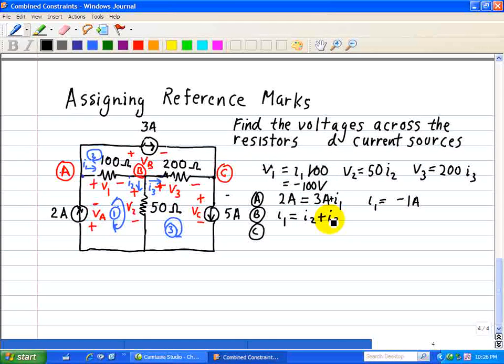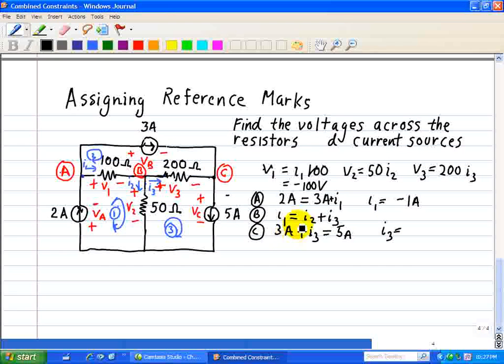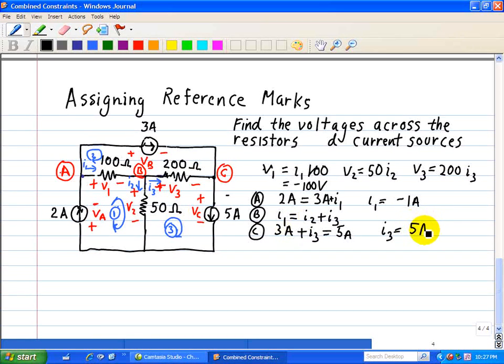We'll take a look at node C now. Our incoming current is 3 amps plus I3, shown here, and our outgoing is equal to 5 amps. So therefore, I3 is equal to 5 amps minus 3 amps, which is equal to 2 amps.